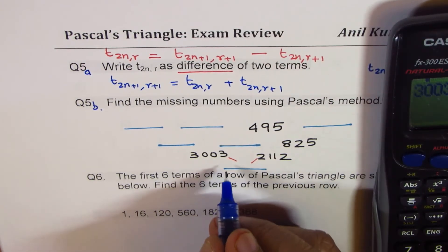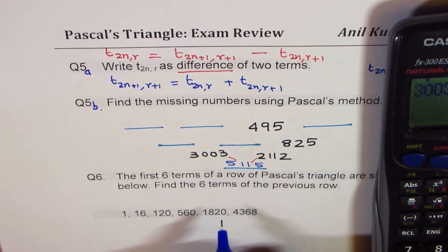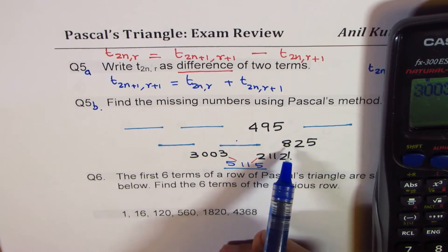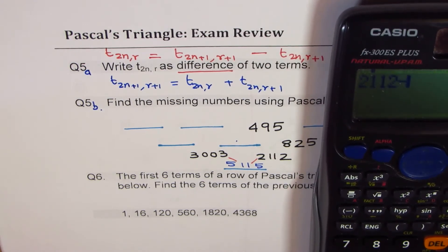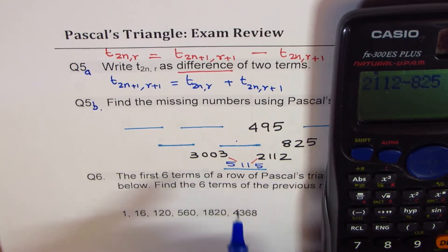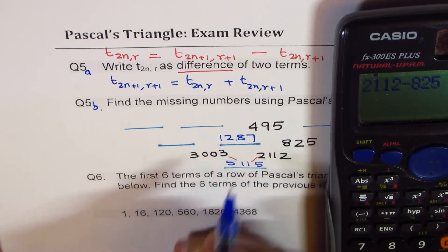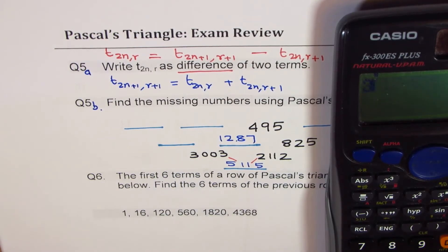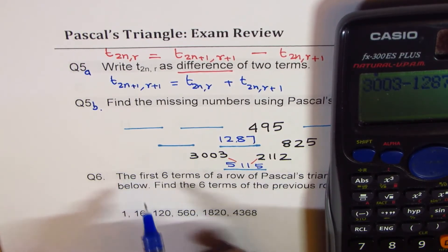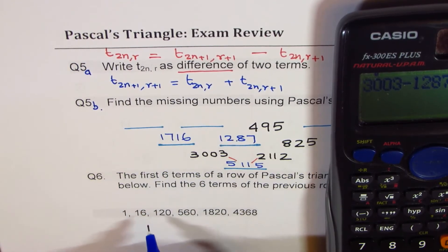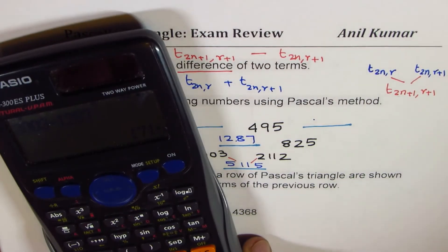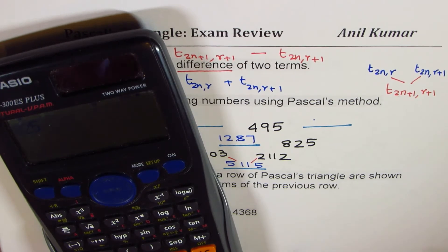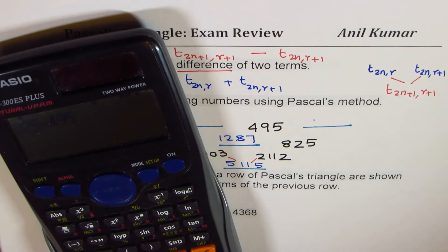So we get 3003 plus 2112 equals to 5115. So that number should be 5115. Now, to get here, we have to take away 825 from 2112. So let's write on. 2112 take away 825 is equal to 1287. So we get 1287.